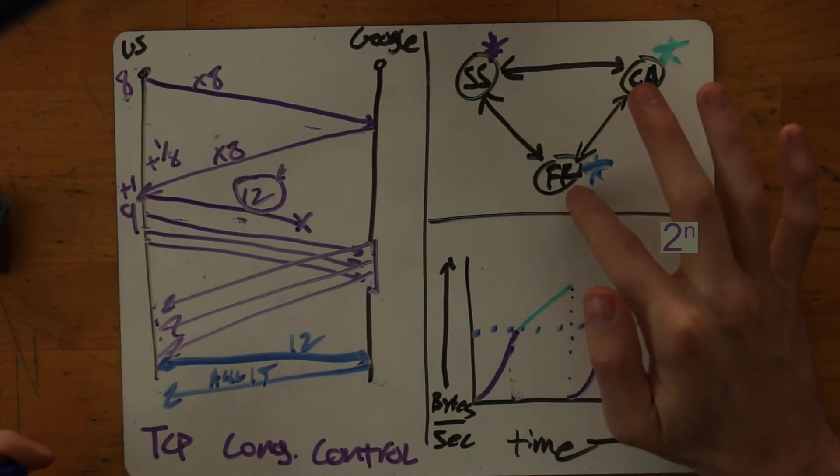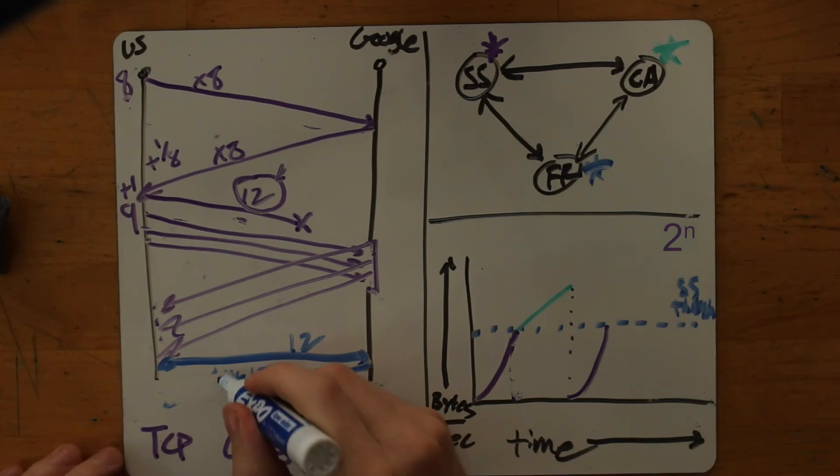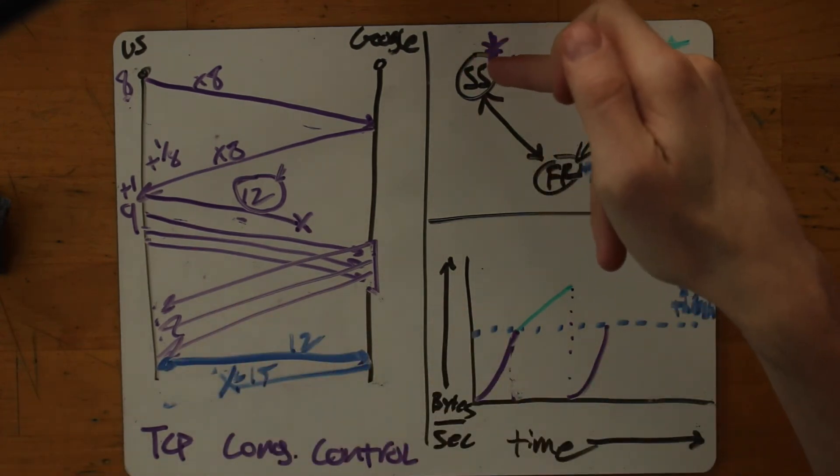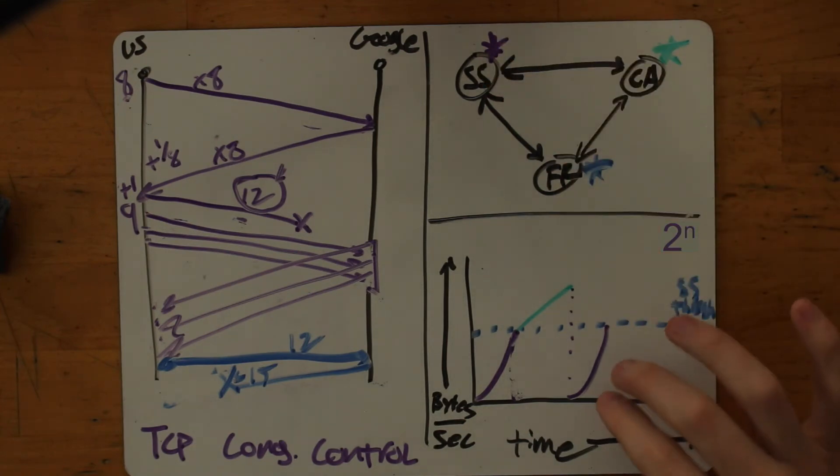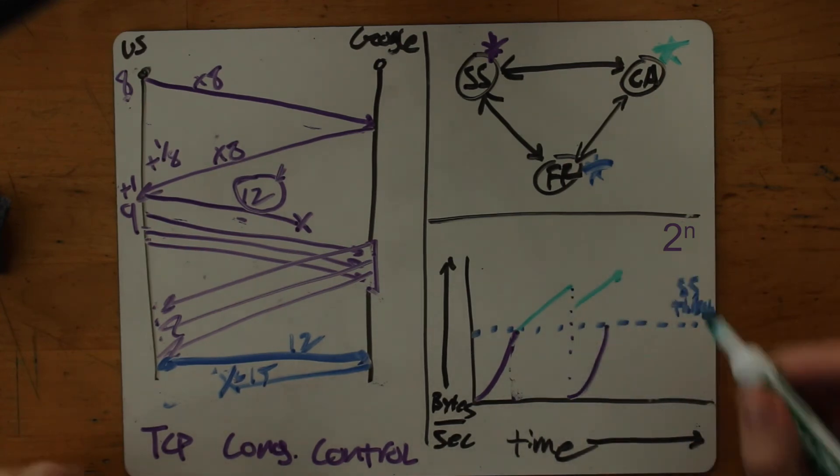Okay, so this is what happens to the connection speed over time when I go back to slow start. And if I do fast retransmit, then really what happens is I basically just continue to grow. I reduce my speed a little bit and I continue to grow.